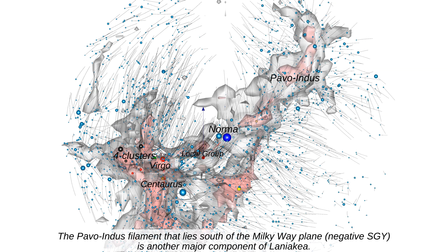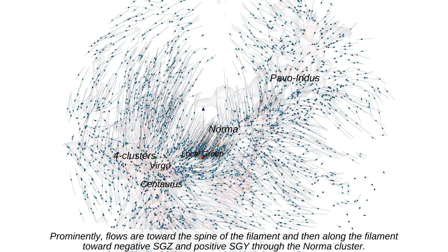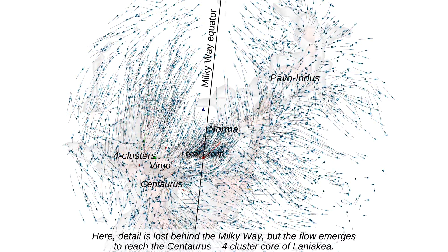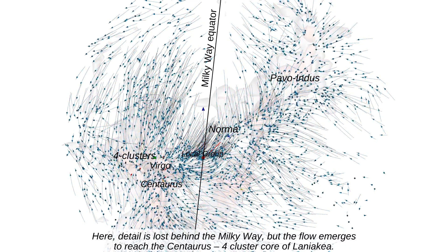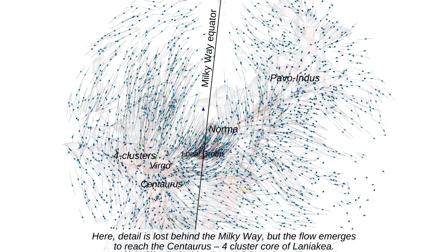The Pavo Indus filament lies south of the Milky Way plane — negative SGY — and is another major component of Laniakea. Prominently, flows are toward the spine of the filament and then along the filament toward negative SGZ and positive SGY through the Norma cluster. Here detail is lost behind the Milky Way, but the flow emerges to reach the Centaurus four-cluster core of Laniakea.